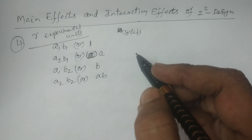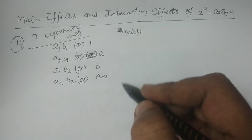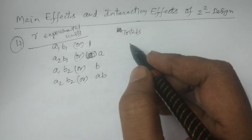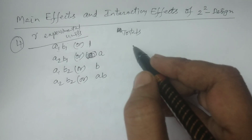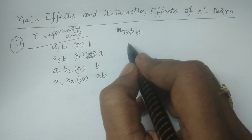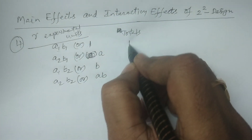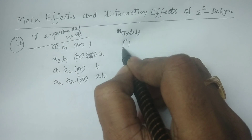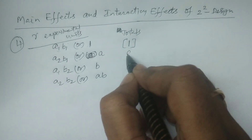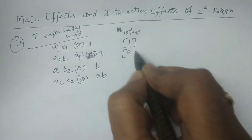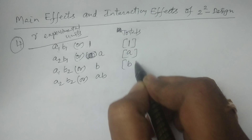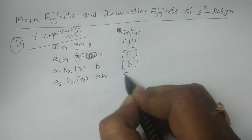If you want to add the total yield, we use square brackets to indicate. Square bracket A, square bracket B, and square bracket AB.